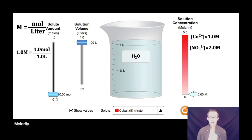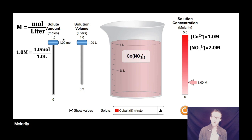The first thing I'm going to do is start with one liter of water and add to it one mole of my solute, which is now cobalt(II) nitrate. One mole of solute in one liter of solution makes a one molar concentration for this solution.